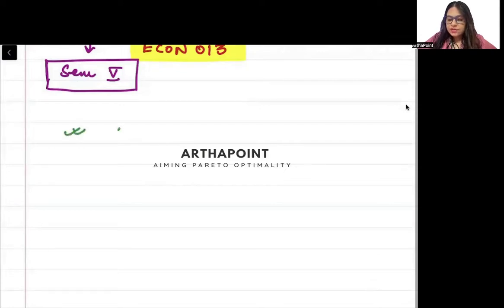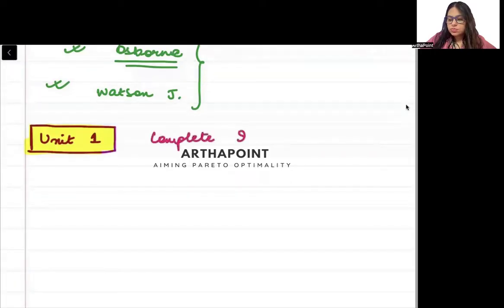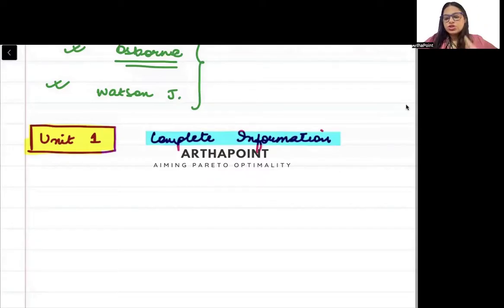So the book that we will be using for this will be Osborne and Watson J. And the following chapters are what would be done. So unit one. In unit one we will be talking about complete information.